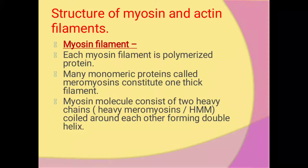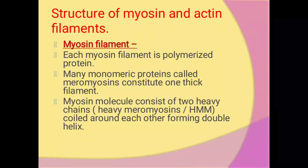Now today we are going to study about the structure of myosin and actin filament. In the microscopic structure of skeletal muscles, which we have already studied in animal tissues, the contractile unit of muscle is called the sarcomere. Inside the sarcomere there is a presence of contractile proteins, known as actin and myosin protein. Let us study about this.